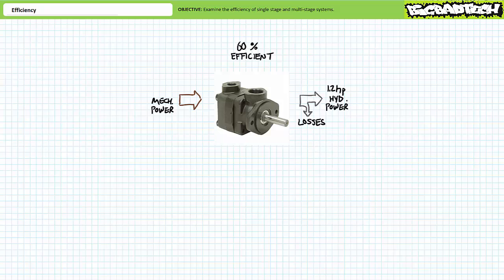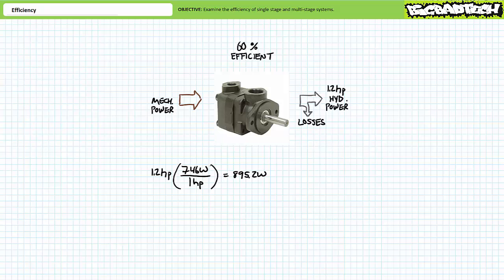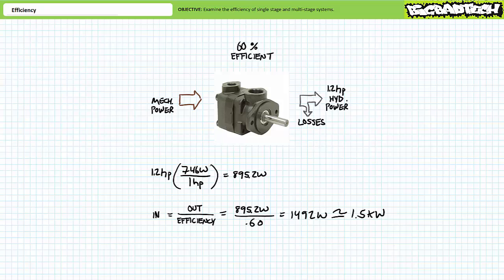Consider a hydraulic pump known to be 60% efficient that produces 1.2 horsepower of usable hydraulic output. Let's calculate the mechanical power input in watts. Via unit conversion, 1.2 horsepower represents an output of 895.2 watts. Input is output over efficiency: 60% expressed as a ratio is 0.6, and 895.2 divided by 0.6 yields a required input of 1,492 watts, or roughly 1.5 kilowatts. Check your work — given losses always occur, input is greater than output, as expected.